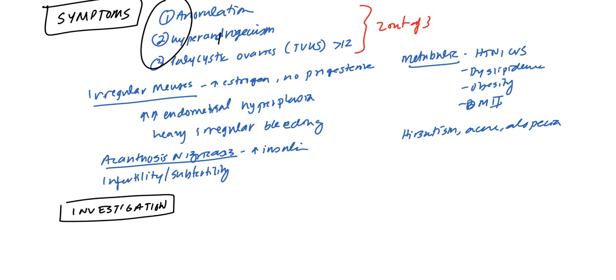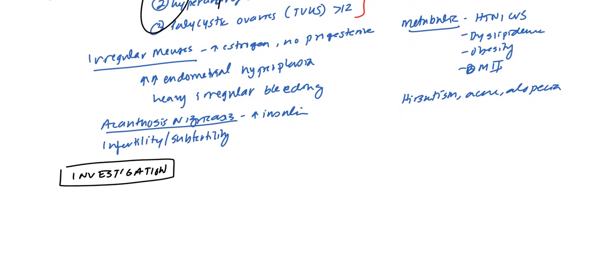Anovulation, hyperandrogenism, or polycystic ovaries. If you have two out of those three then it gets diagnosed. Still though, this is primarily a diagnosis of exclusion.